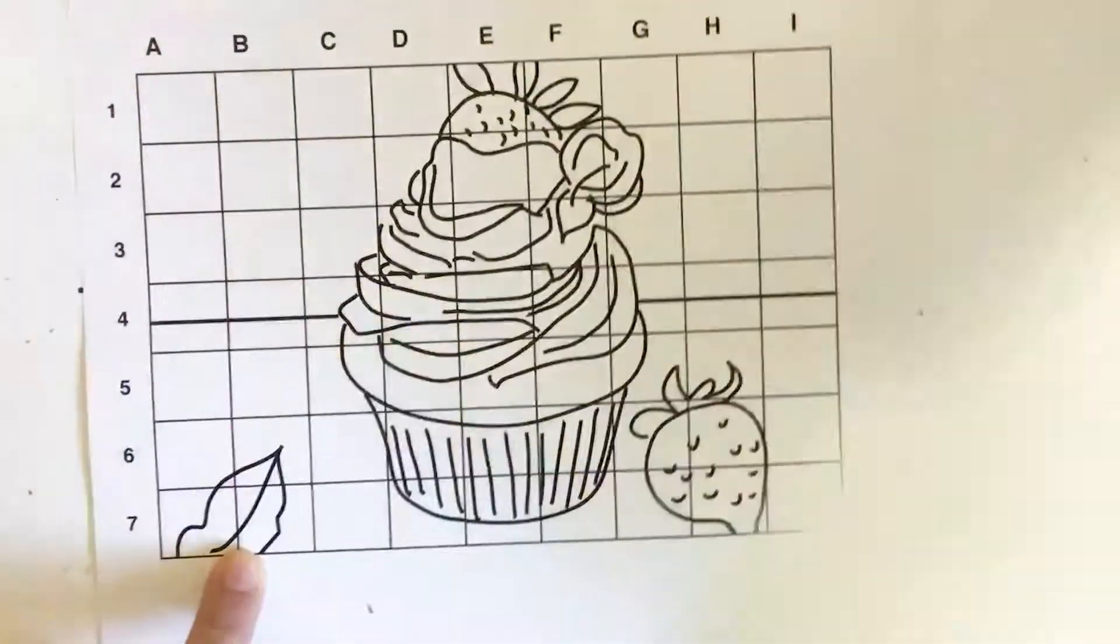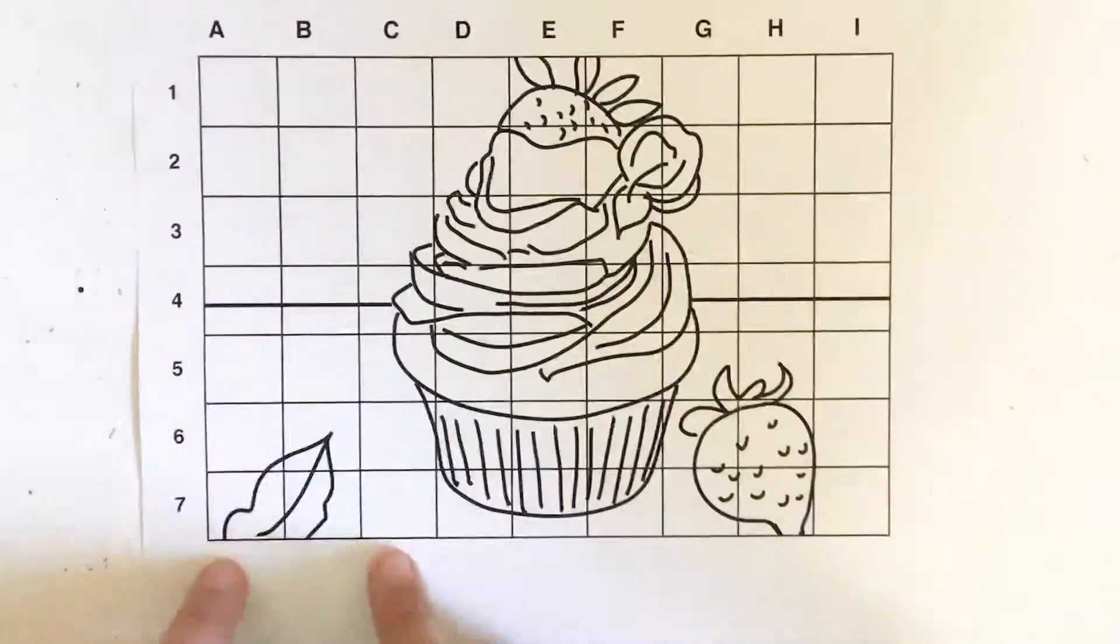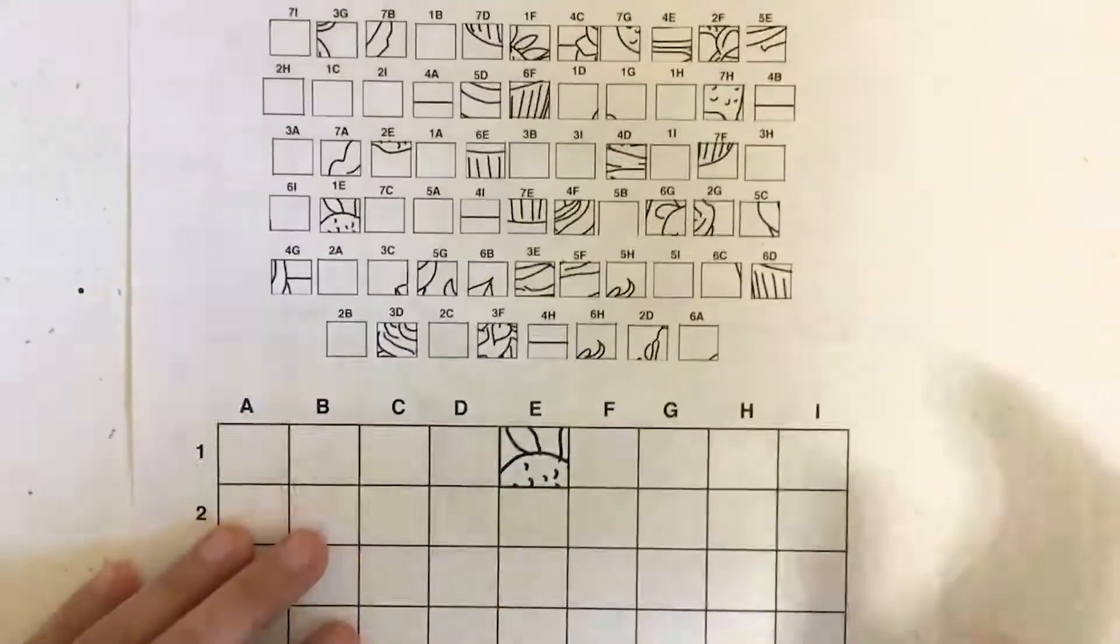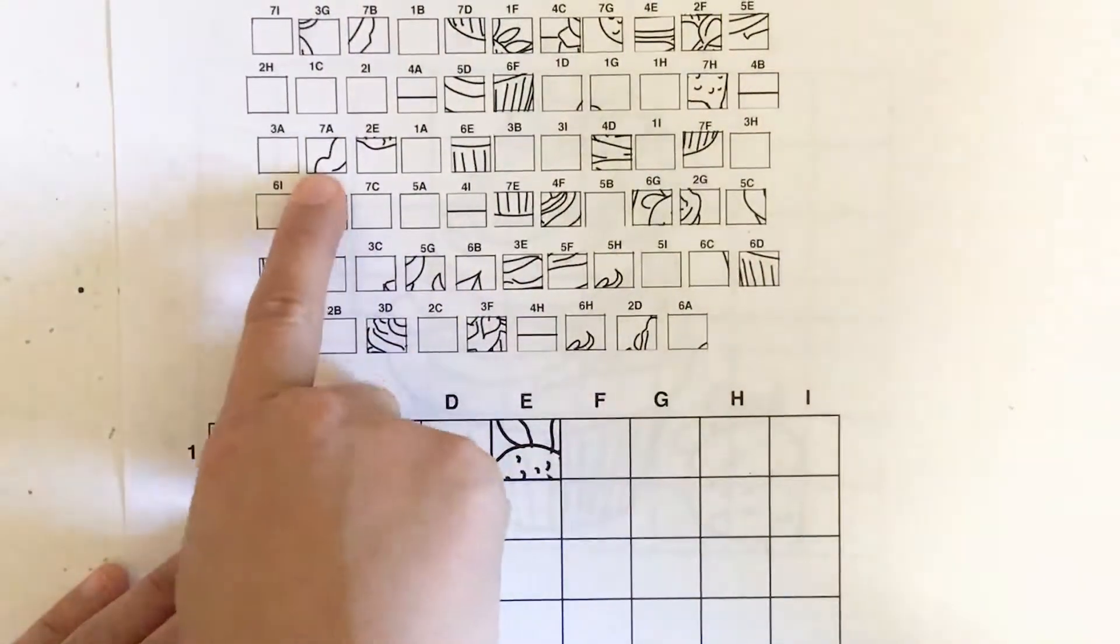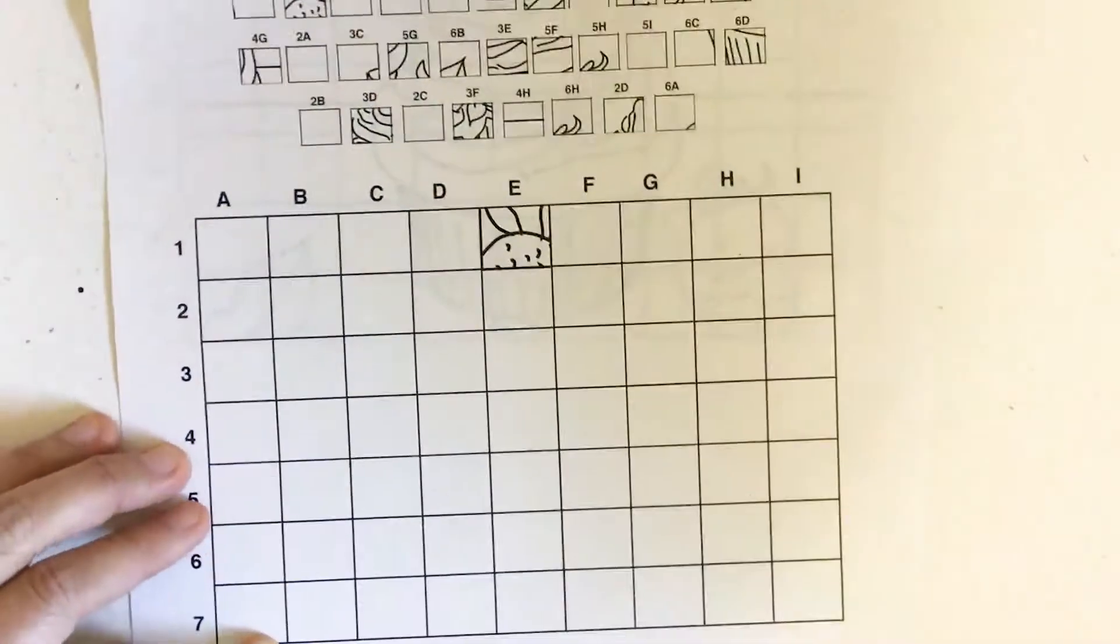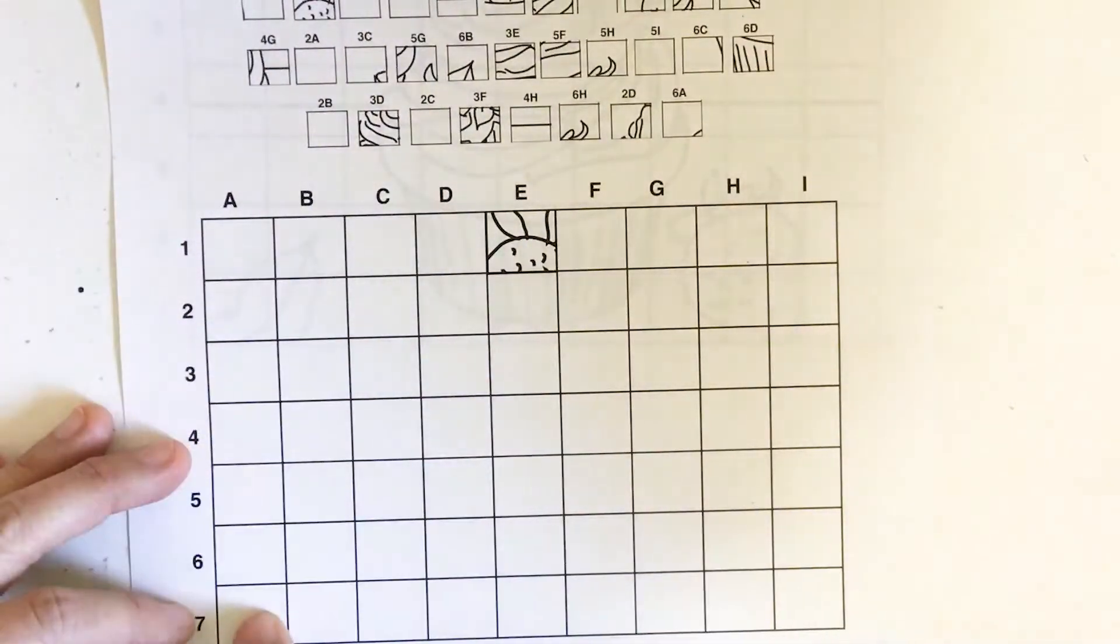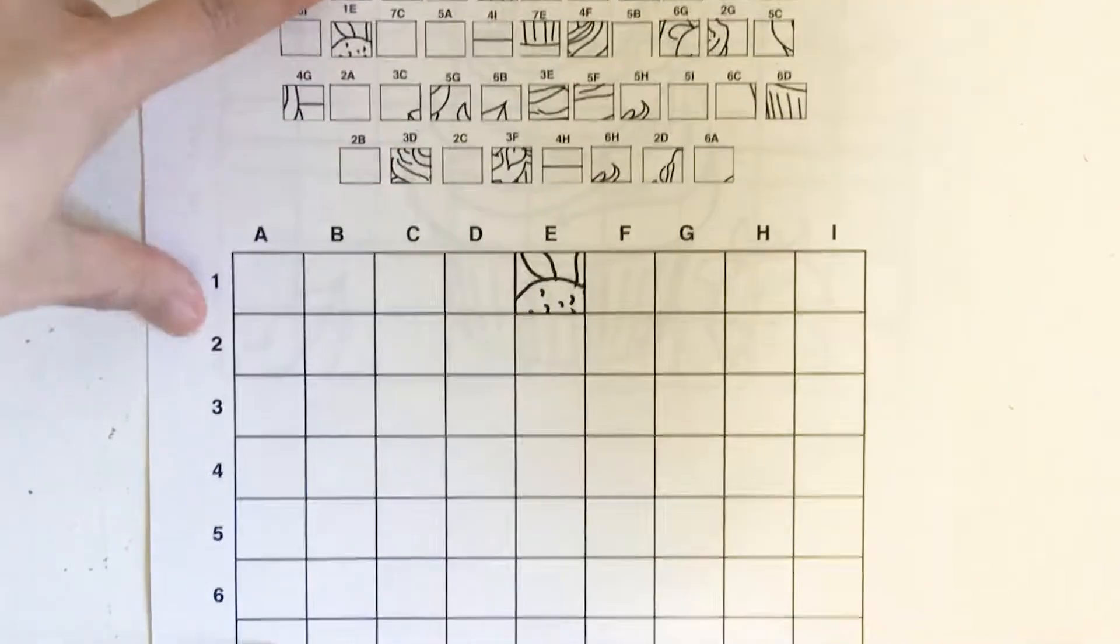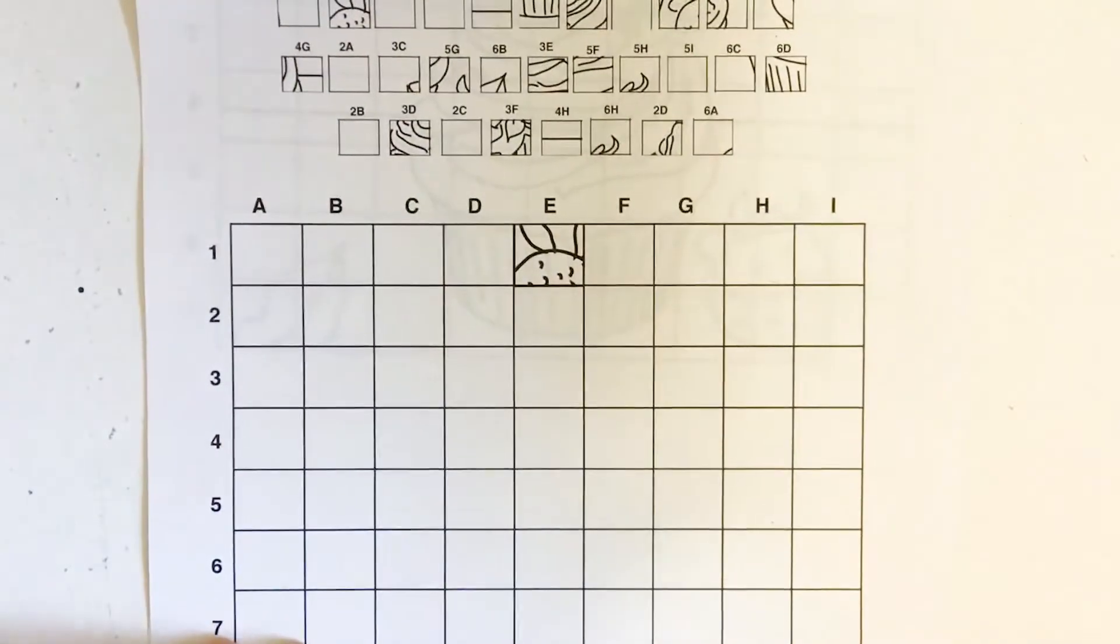This one right here on the answer key is what I would call 7A. There's 7A here. Then they would look right here down at the bottom and they would look for 7A and they would actually copy what they see from 7A here down to 7A down here.